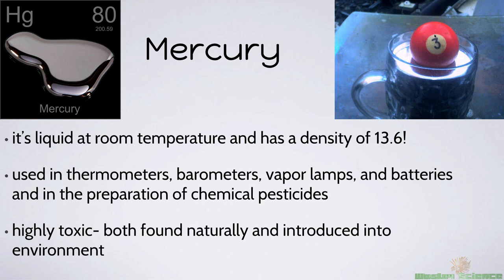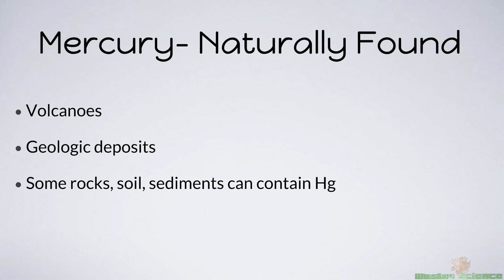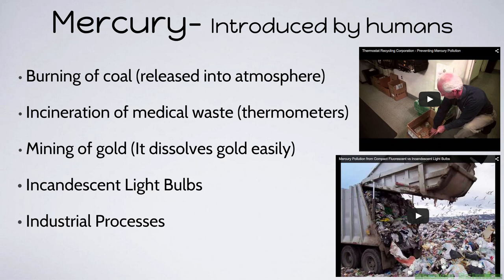Mercury is both found naturally and can be introduced into the environment naturally. It can be found from volcanoes and geological deposits — just found in different rocks. Some rocks, soil, and sediments can even contain small traces of mercury, usually kept away safely. When introduced by humans, it's a different story. Mercury can be introduced into the atmosphere when we burn coal, because there are traces of mercury in coal, so it can get released from coal-fired power plants. When we incinerate or burn medical waste — like old thermometers thrown in the trash — it will eventually get burned and put into the air.